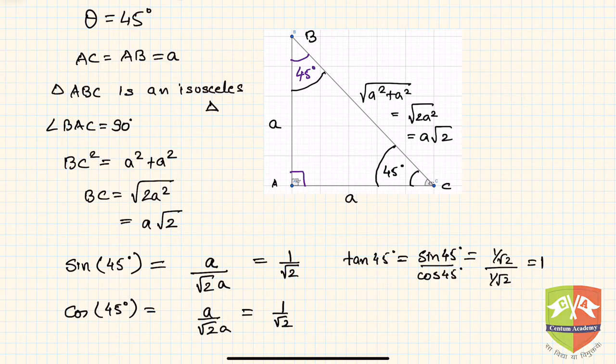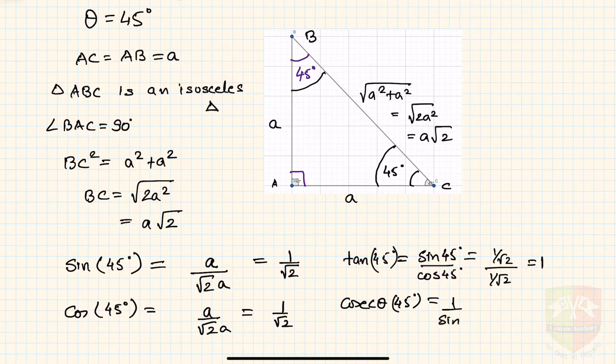Now cosecant 45 degrees: cosecant 45 is 1 upon sine 45, which is 1 upon (1/√2), hence it is √2.